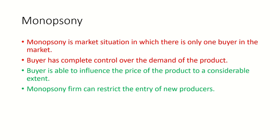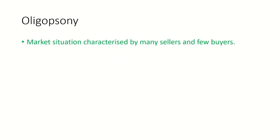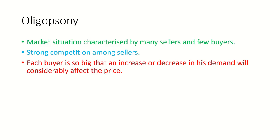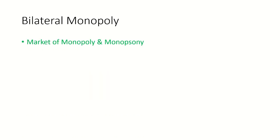In monopsony, new firms will not easily enter the market. Next is oligopsony. Oligopsony is a market situation characterized by many sellers and only a few buyers. The main characteristic is strong competition among sellers because there are many sellers but only a few buyers. Each buyer is so large that an increase or decrease in demand will constantly affect prices.